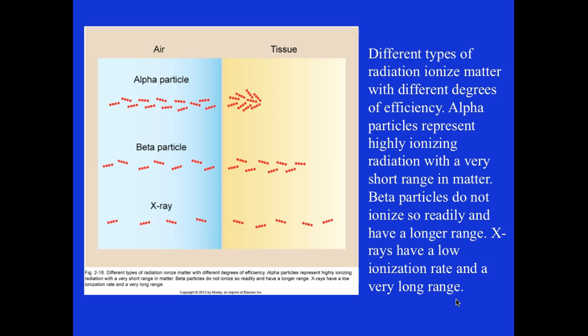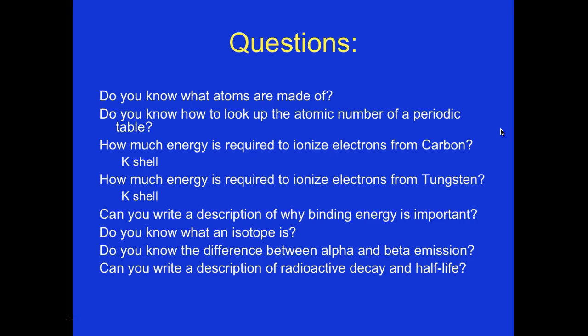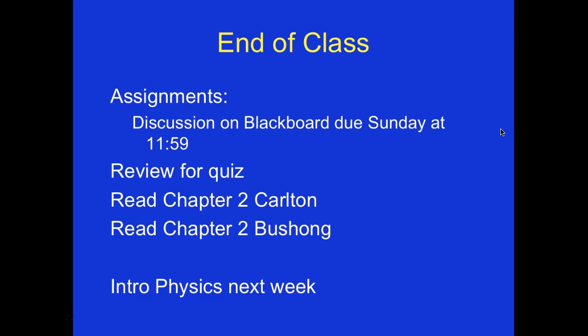Looking at the different types of radiation: alpha particles ionize a lot but can only travel a short distance because they're so large. Beta particles penetrate deeper, and x-rays can pass all the way through. Alpha represents highly ionizing radiation with a very short range; beta particles do not ionize as readily and have a longer range; x-rays have low ionization rates but a very long range. These are the discussion board questions — make sure you answer them. Discussion board posts are due next Sunday. Review for the quiz, read Carlton and Bushong, and next week we head into more physics. Good luck!